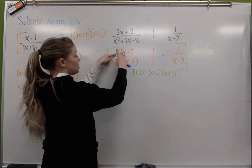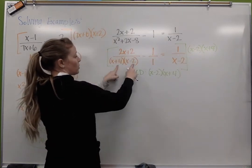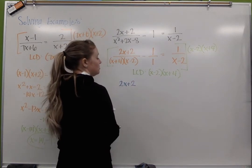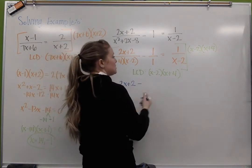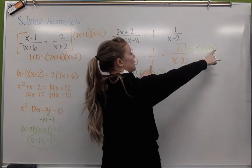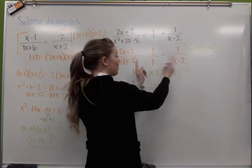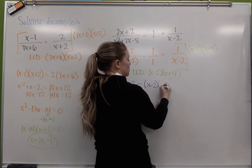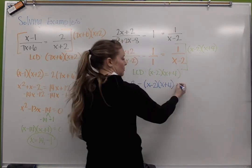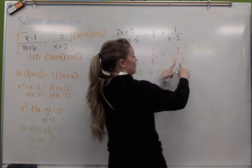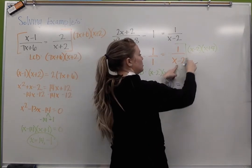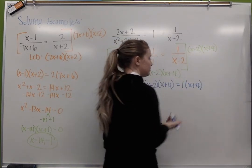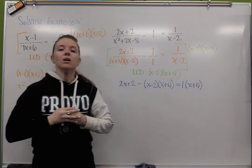All right, so when I multiply x minus 2 times x plus 4 to 2x plus 2, the x plus 4 and the x minus 2 reduce, leaving me with 2x plus 2. Minus, when I multiply x minus 2 times x minus 2 times x plus 4 to 1, nothing's gonna cancel, so I'm gonna be left with x minus 2 times x plus 4. Equals, here my x minus 2s will reduce, leaving me with 1 times x plus 4.